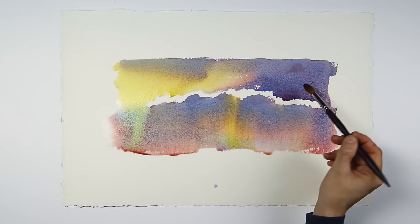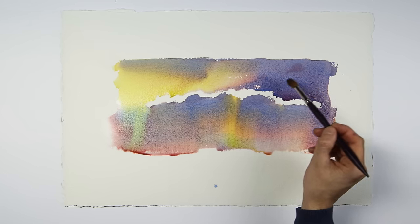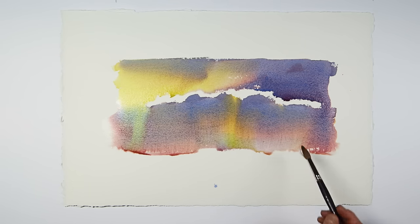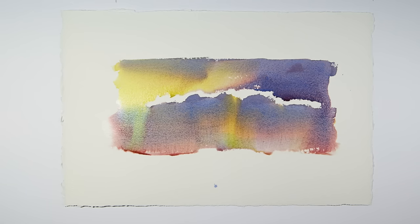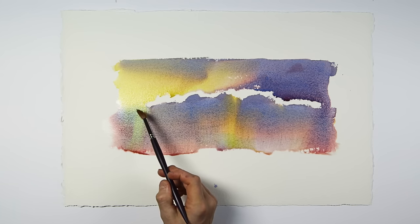Look here at how the sediment of the cerulean has settled into the texture of the paper. And here, where the alizarin and the cerulean have separated from each other. Also areas here where the yellow and blue have made green.